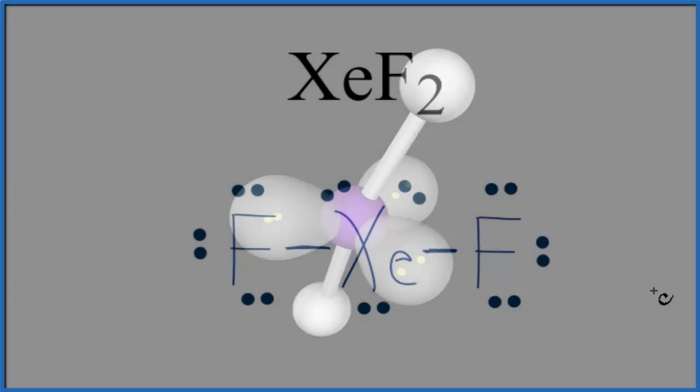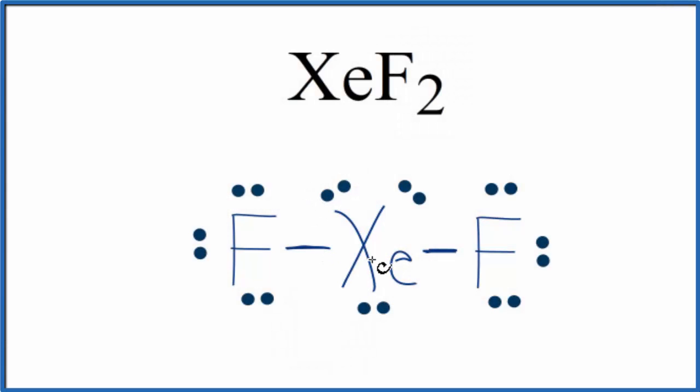Back to our Lewis structure. So we can say that the bond between the xenon and the fluorine is polar, this bond here and this bond here. But overall, because it's symmetrical, the dipoles cancel out. XeF2, xenon difluoride, is a nonpolar molecule.